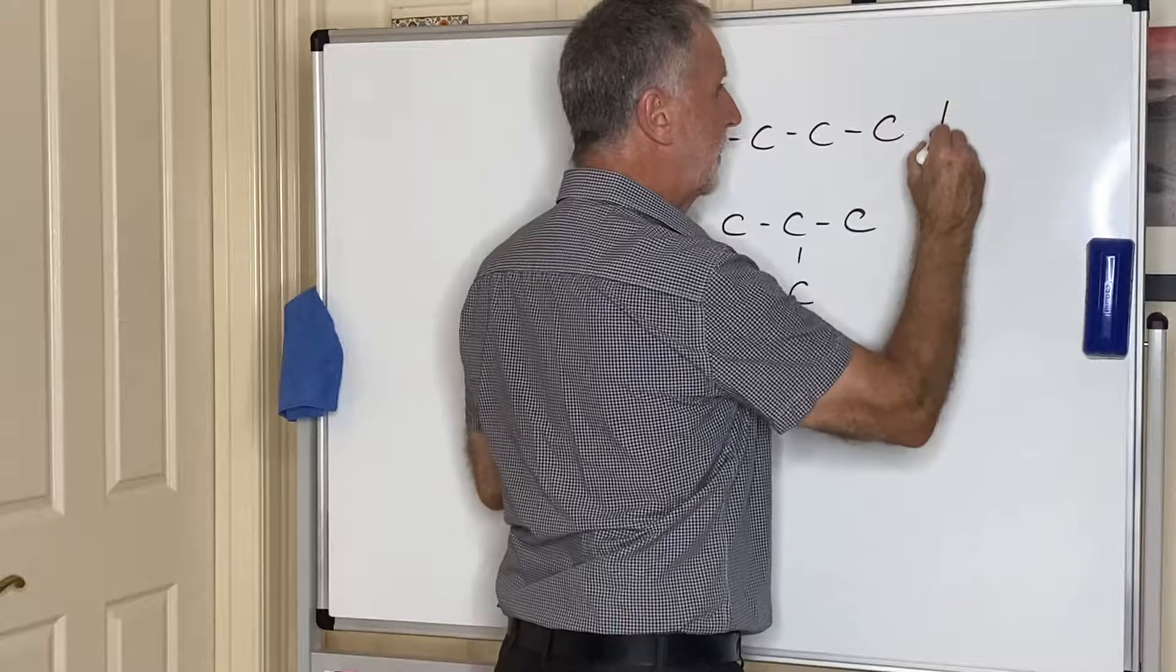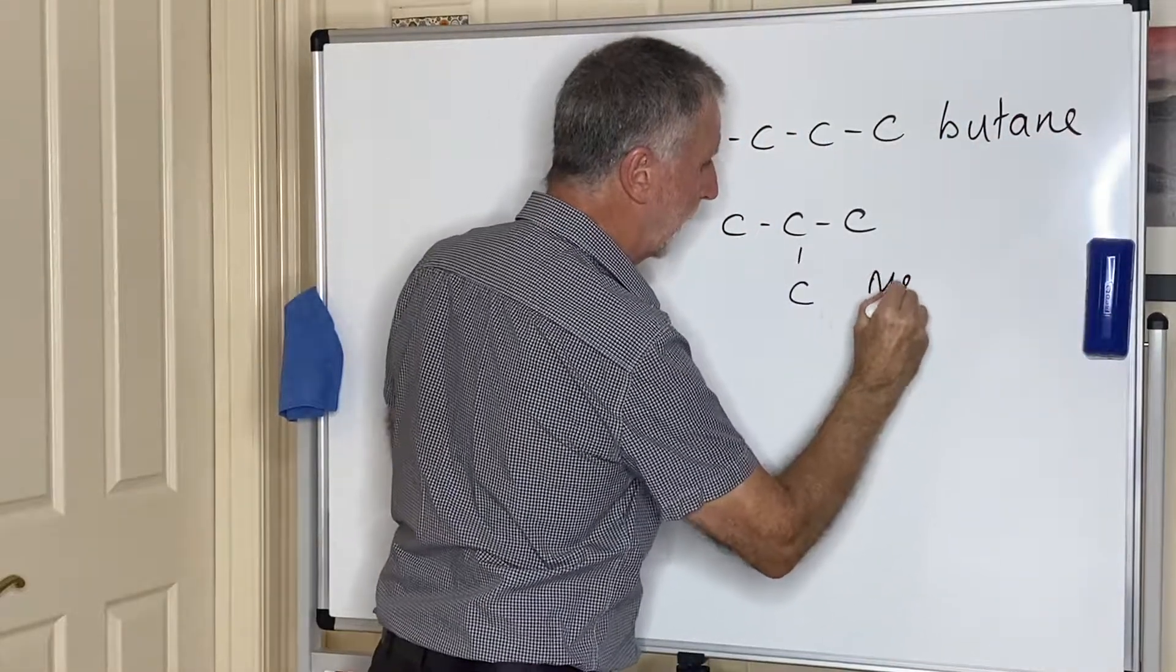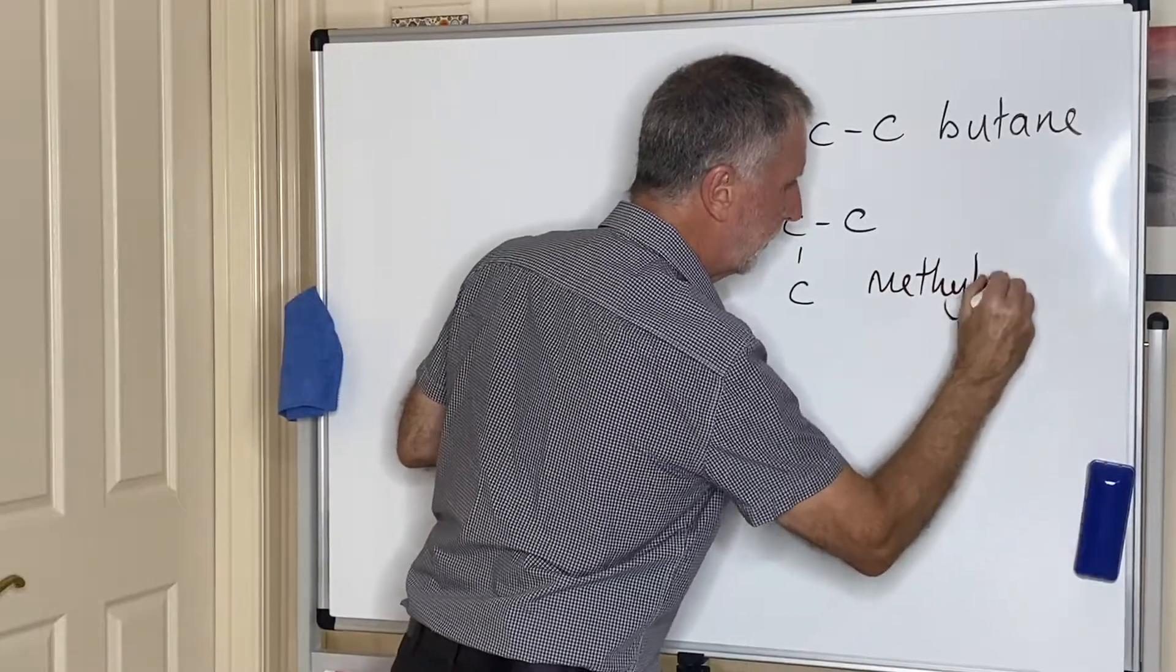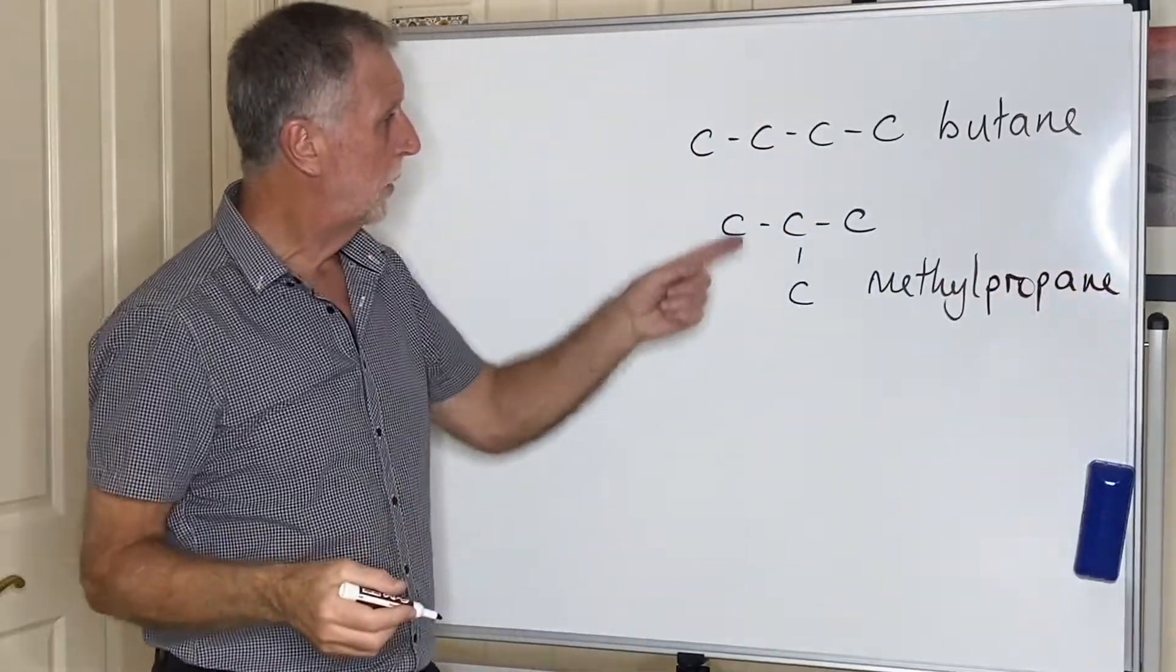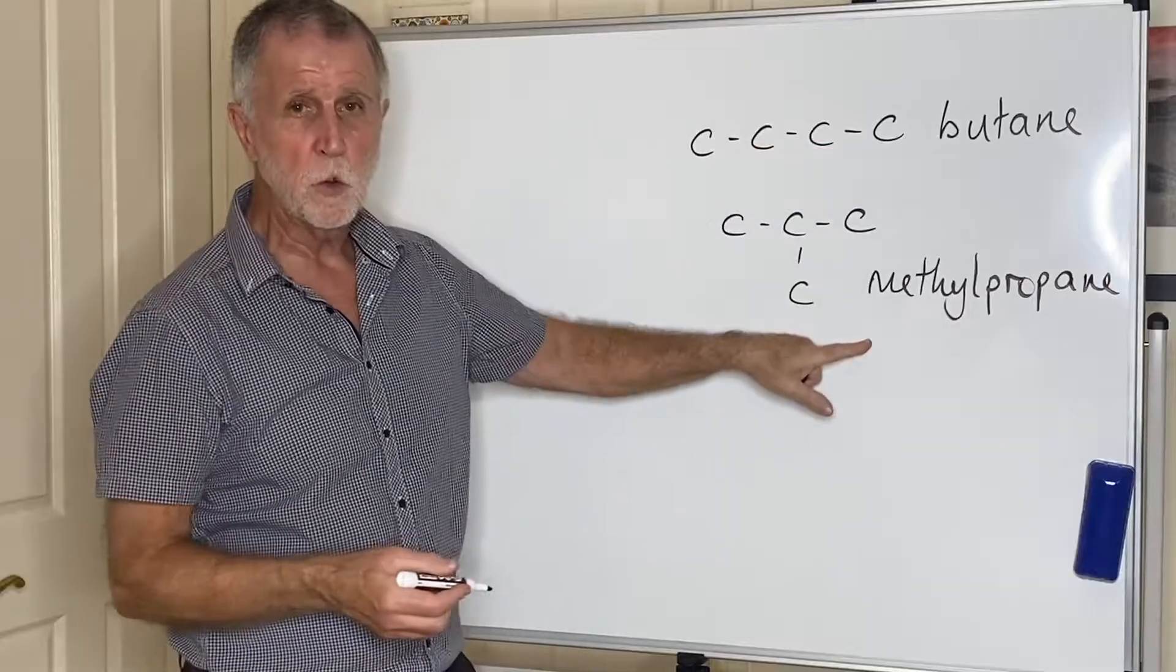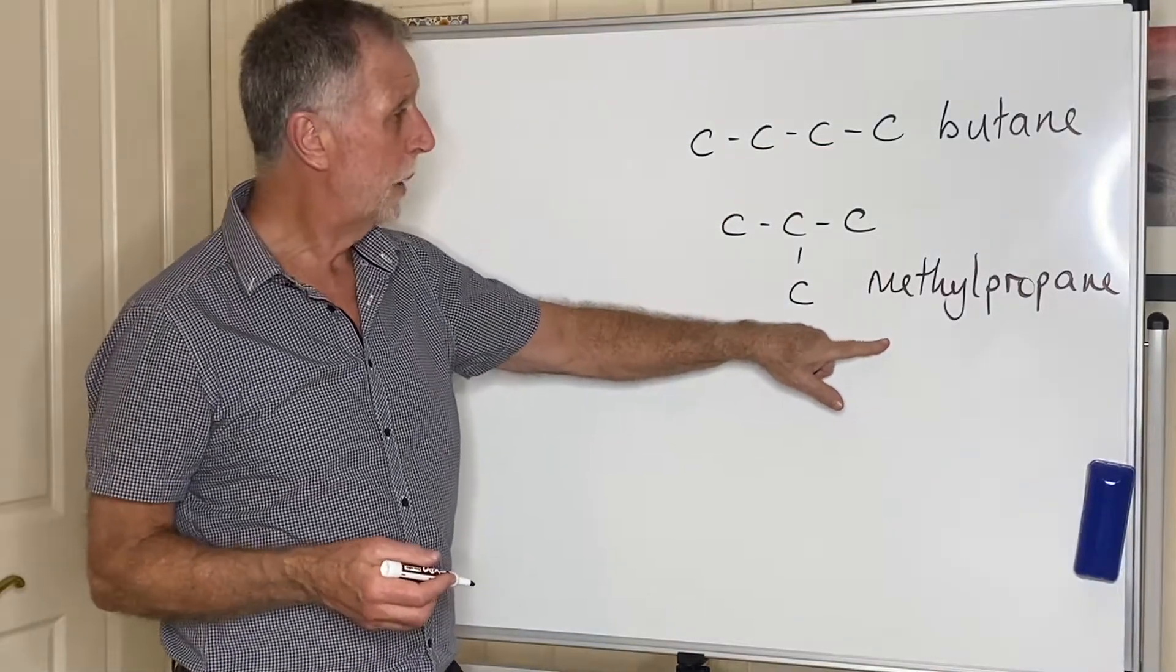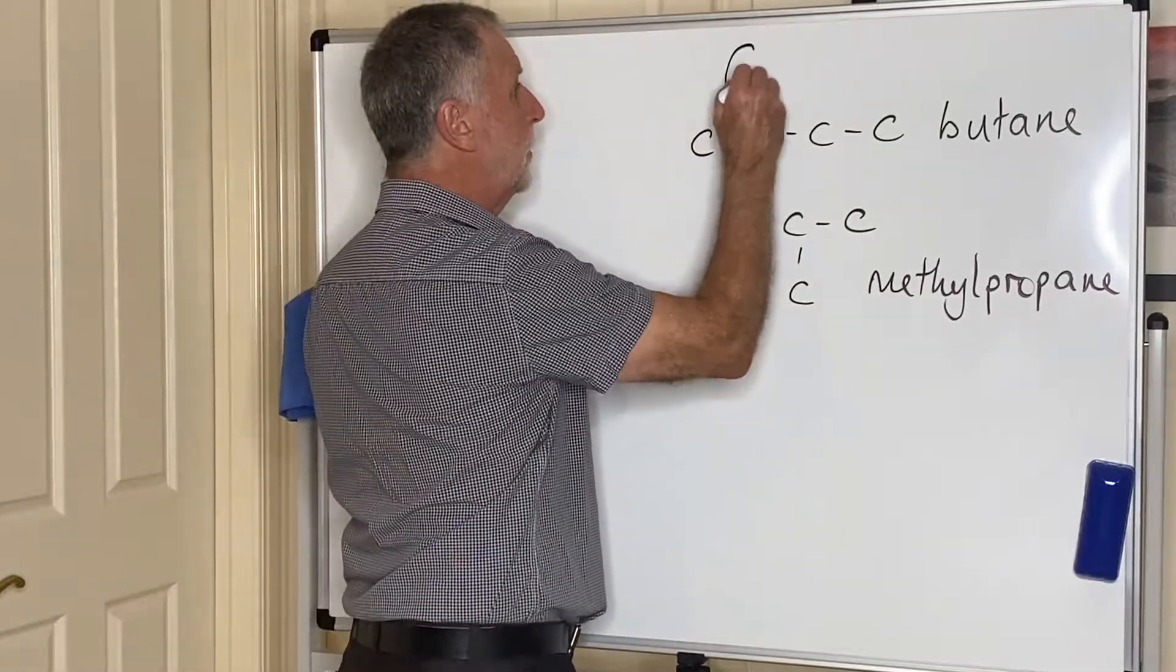This is butane and this is methylpropane. There will be no alternatives for just three carbons. You need to get to four before you can do this. And we call these isomers.